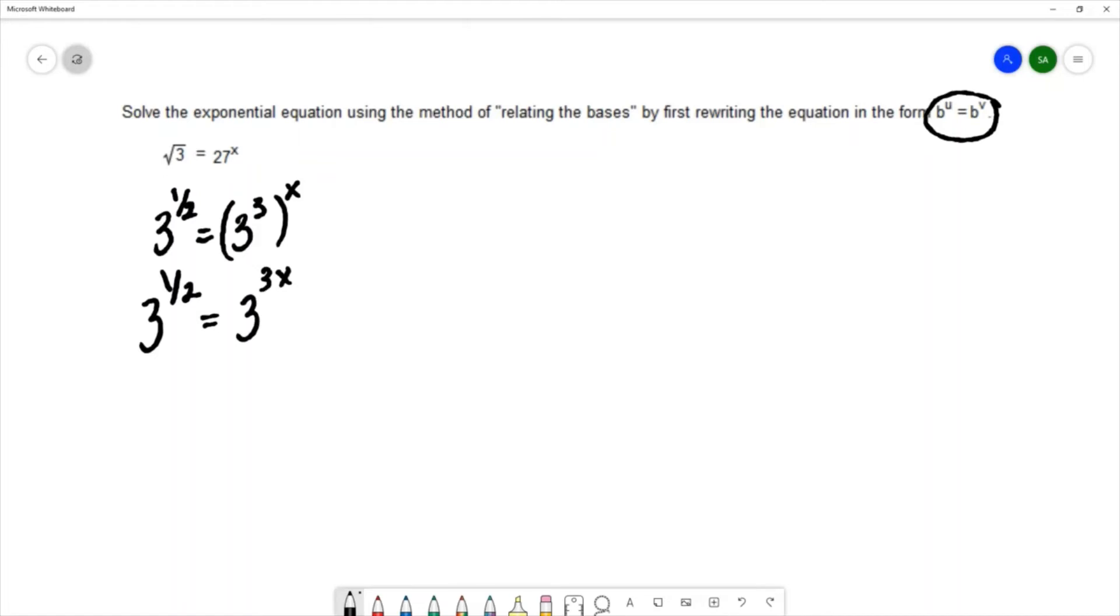Our method of relating the bases says that once we write it in this format, the exponent on the left needs to equal the exponent on the right, allowing us to simplify this equation. We can write it as one half, the exponent on the left, equaling 3x, the exponent on the right.